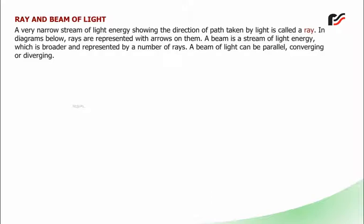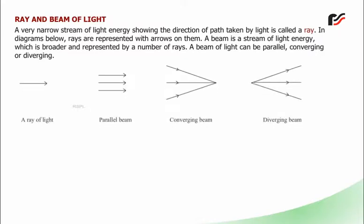A beam is a stream of light energy which is broader and represented by a number of rays. A beam of light can be parallel, converging, or diverging. Before proceeding further, let us make a quick revision of some important terms.